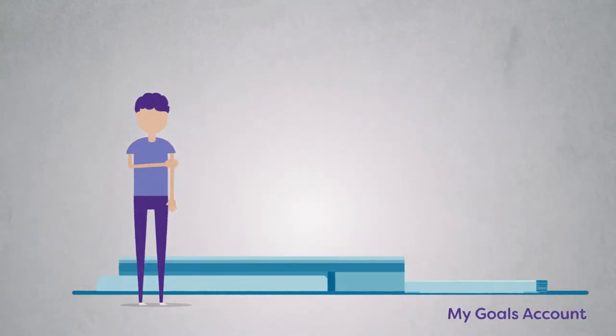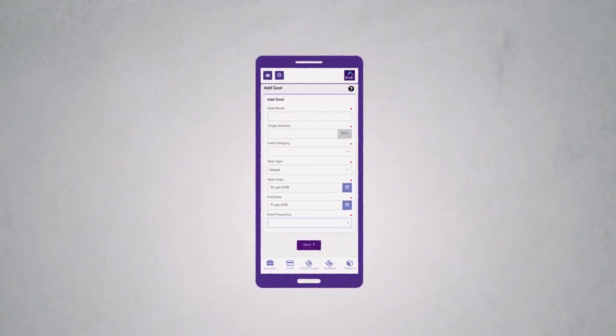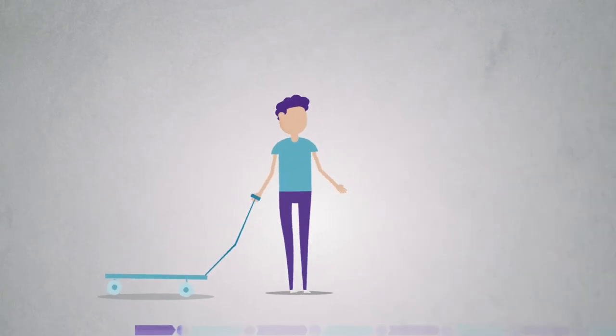Saving for something special? A house? A new car? A trip? The new Goals Account and Budget feature helps you manage your money and achieve any financial goal through automated monthly savings.